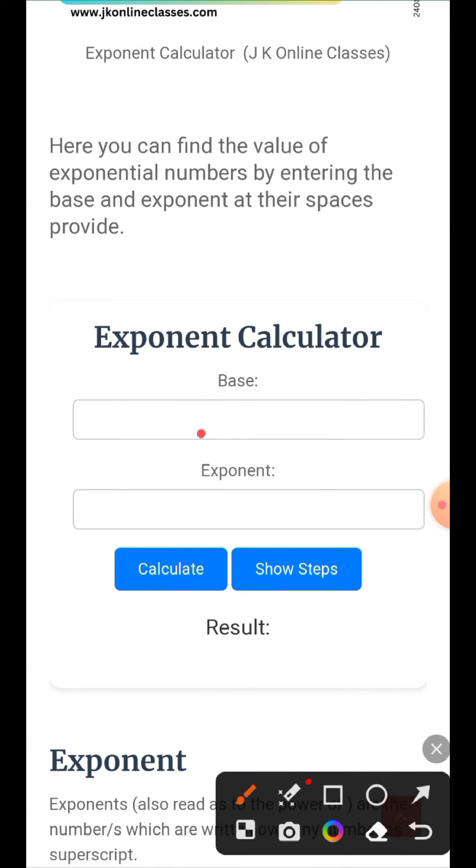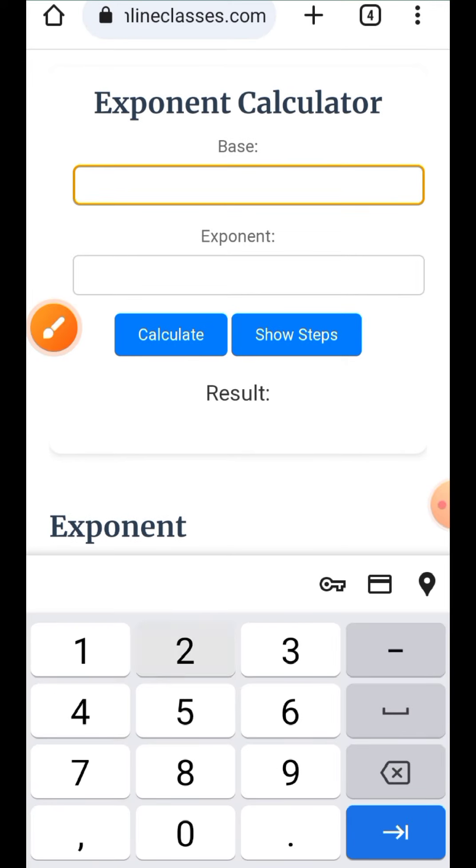For example, if the base value is 2 and the exponent is 3, when you calculate it, you will get the result of the exponent calculation.